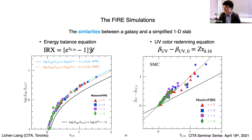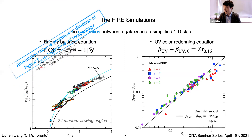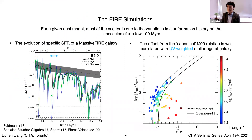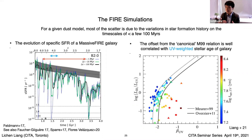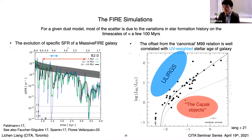From the simulations, we find that the most important mechanism driving scatter from the standard IRX-beta relationship is related to the star formation history on a timescale of about 100 million years. When you average over longer timescales — about 1 billion years — the correlation is not as large. It's very sensitive to the 100-million-year timescale. This also raises the question of whether different simulations with different predictions for star formation history on this timescale would show different scatter compared to the FIRE simulations.